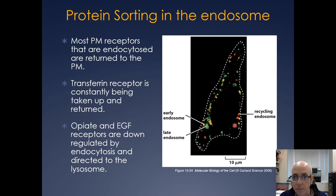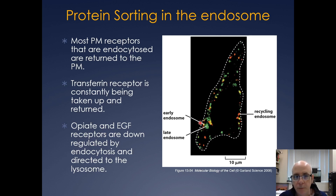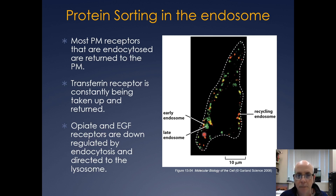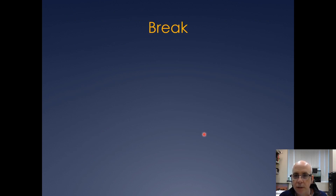Here's a staining showing recycling endosomes, late endosomes, and early endosomes and how they all correspond. As a general rule, many receptors undergo this process — the transferrin receptor is constantly being taken up and moved back to the plasma membrane, while other receptors like the opiate receptor and EGF receptor are actually downregulated by endocytosis and directed to the lysosome to be degraded. That's it for this part — we'll pick up from there in the second half.